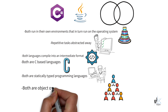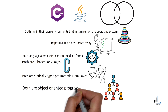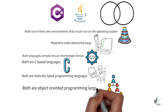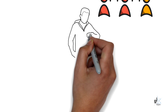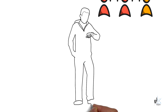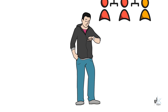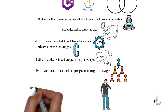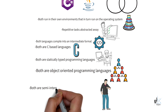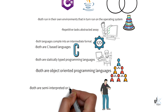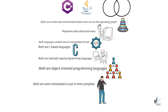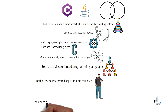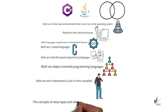SOLID principles can be implemented for architecting applications so that each class has a single responsibility, code is easily reused, and the design of the application's constituents are extensible. Both languages typically use semi-interpreted or runtime just-in-time compilation. The concepts of value types and reference types exist in both languages. Value types like integer, float, and boolean are stored on the stack in memory, and reference types like strings and user-defined types are stored on the heap.